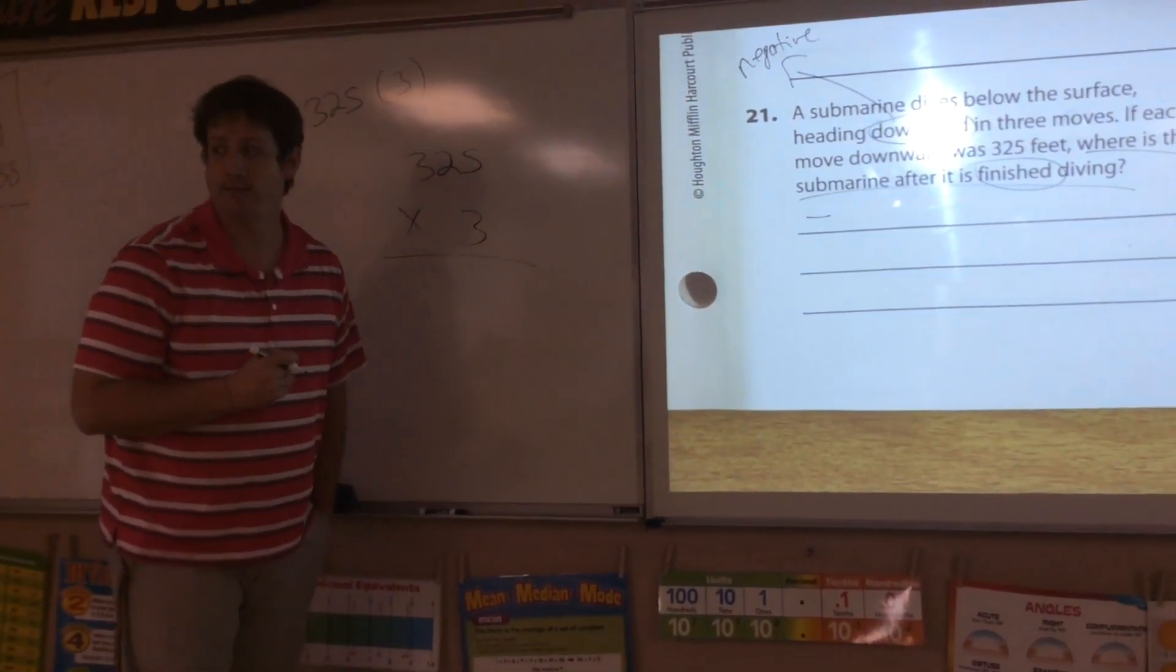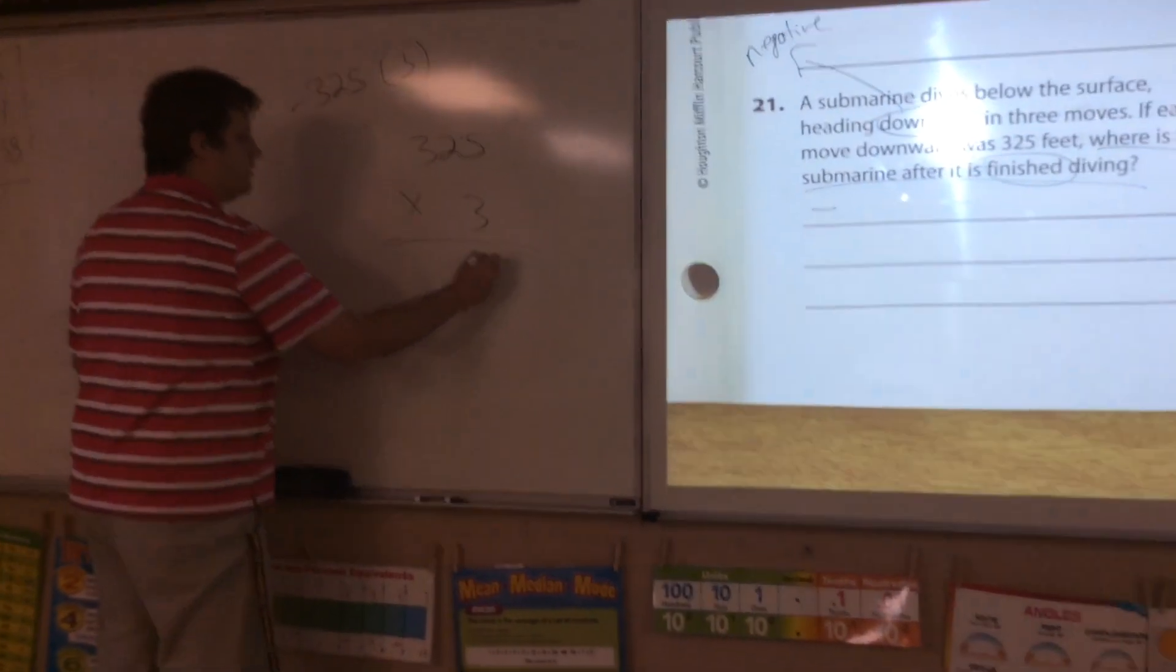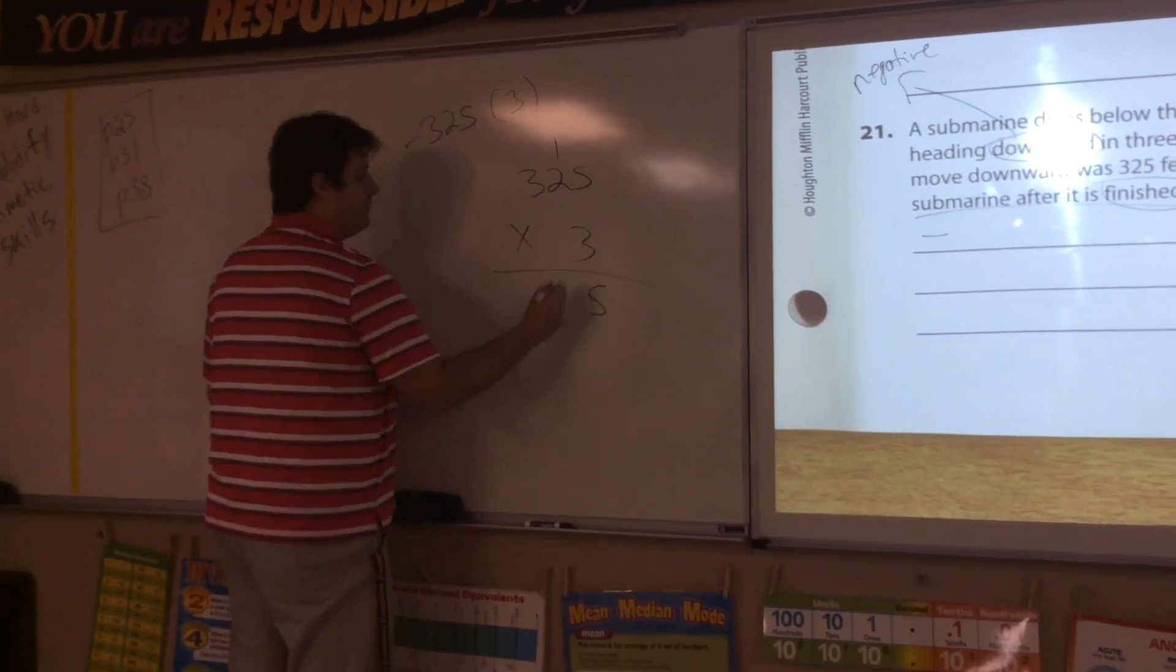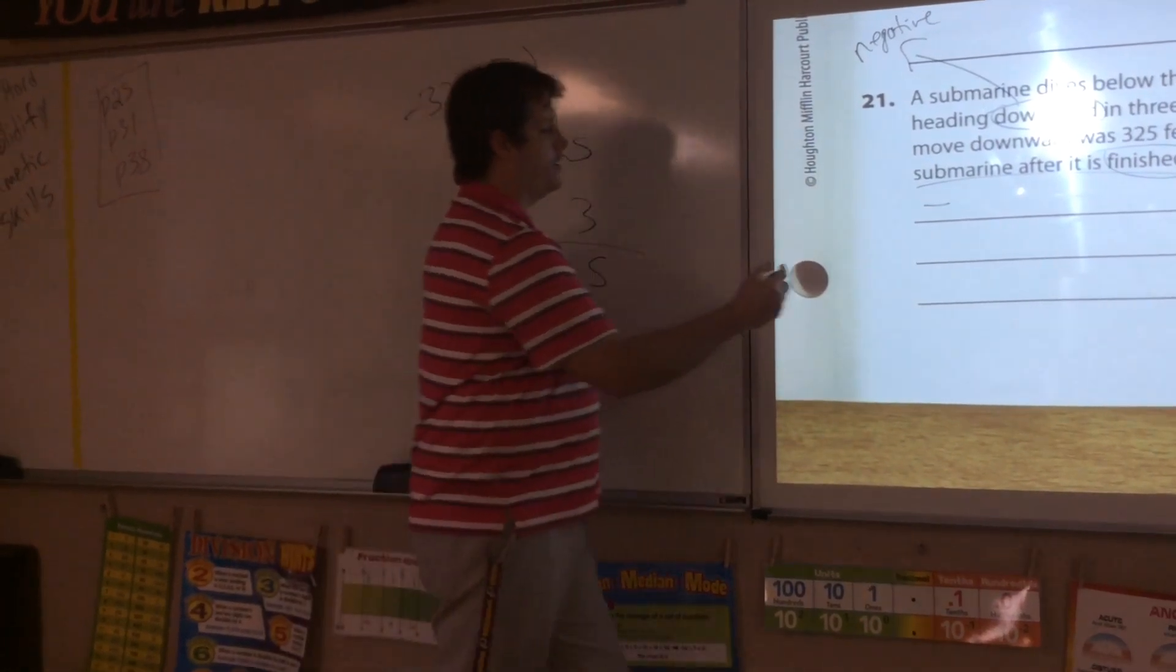Correct class? Yes. Alright? 5 times 3 is 15. 2 times 3 is 6. Plus 1 is 7. 3 times 3 is 9. Very easy question.